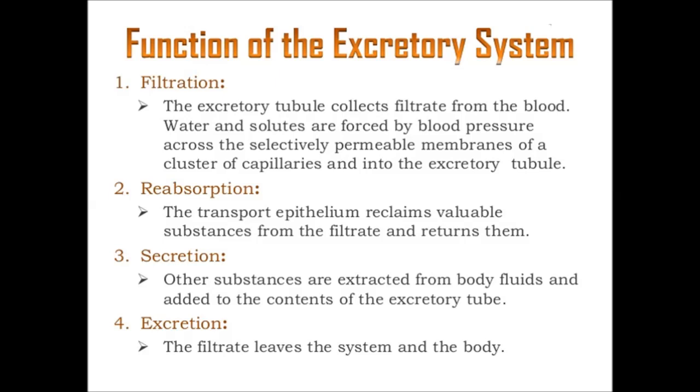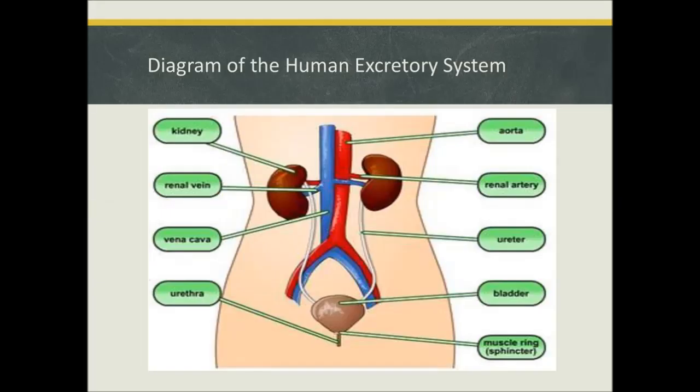The last function is excretion, where the filtrate leaves the system via urine formation. This is a diagrammatic view of the human excretory system, which includes the kidney, the main aorta through which purified blood is carried to other parts of the body, and the renal vein which carries deoxygenated, impurified blood to the kidney.